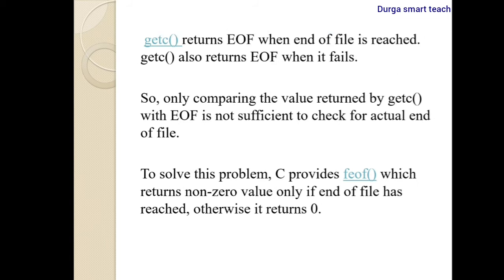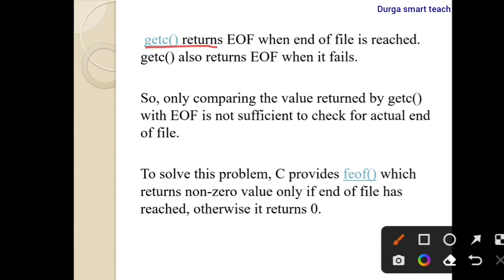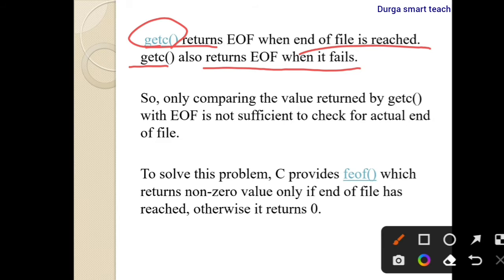The getc() function returns EOF when end of file is reached. The getc() function is used to return one character. If there is no character in a file, it returns end of file.